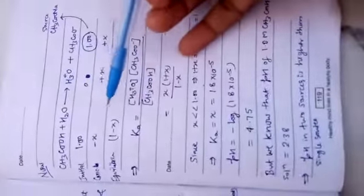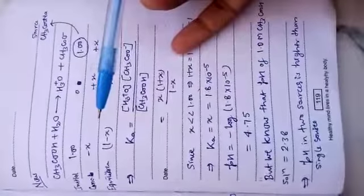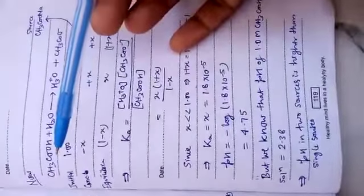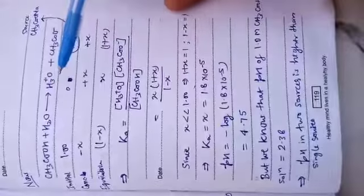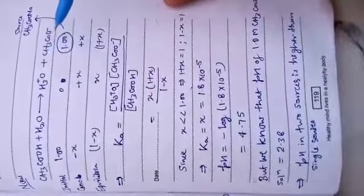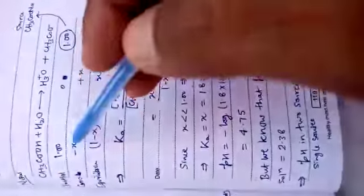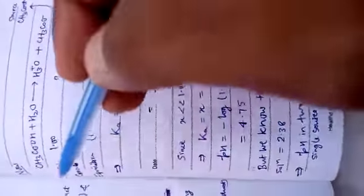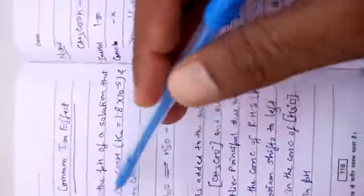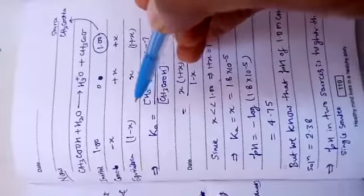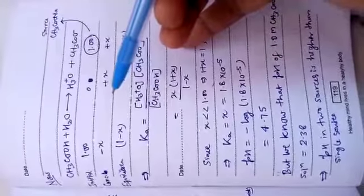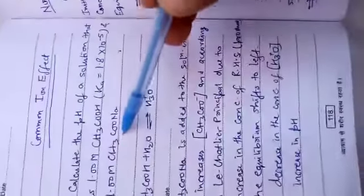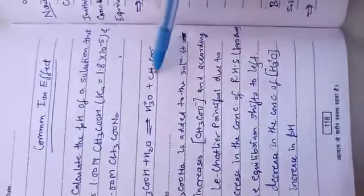You will have to write the equation another time: CH3COOH + H2O gives H3O+ plus CH3COO-. Initially it is 1 molar acetic acid. Here, this one is 1 molar, but we know with the addition of sodium acetate it will give acetate ion, so initially it will give the concentration of acetate ion as 1 molar.